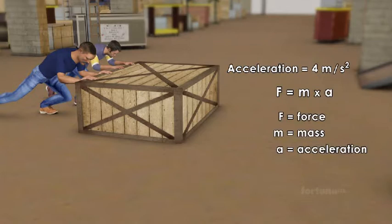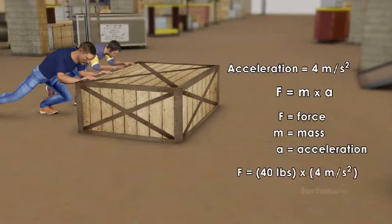Let's substitute values that we already know into the formula, and then we can solve for any we don't know. We know the mass of the box is 40 pounds, and the acceleration is 4 meters per second squared.